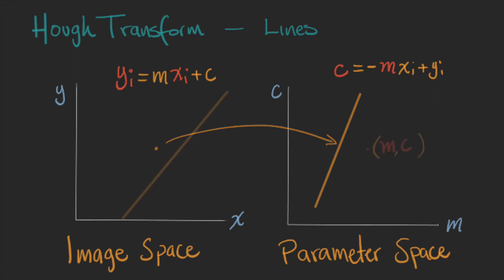a point mc in the parameter space represents a line in the image space. And it's clear because we know the values of the slope and the intercept.